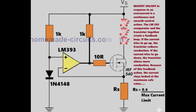The LM393 comparator and the transistor together create a feedback loop. If the current tries to go up, the transistor reduces conduction. If the current tries to go down, the transistor allows more conduction.